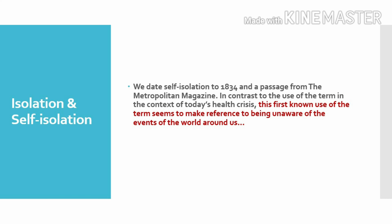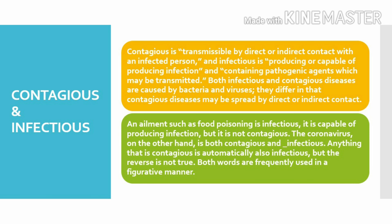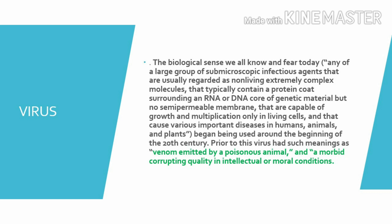Next terms: isolation and self-isolation. Isolation means the process of being isolated — for example, in a hospital ward for patients with contagious or infectious diseases. Self-isolation means the act of separating oneself from others. Contagious means a disease spread from one person to another by direct or indirect contact. Infectious means a disease likely to be transmitted through the environment — for example, food poisoning is infectious but not contagious. The coronavirus is both contagious and infectious. Anything contagious is also infectious, but the reverse is not true.